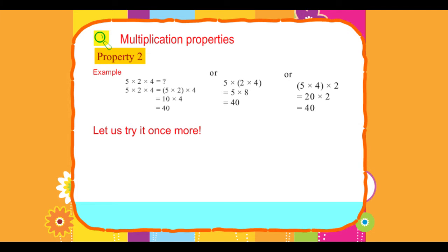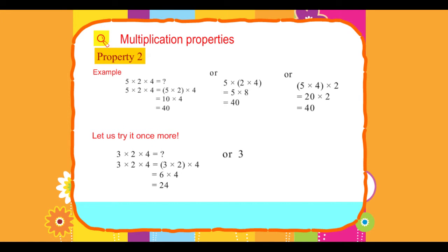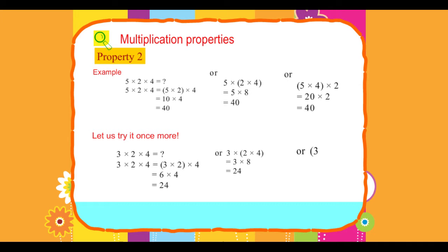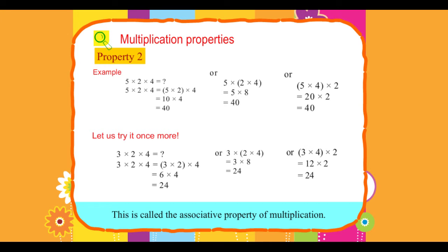Let us try it once more. 3 × 2 × 4: (3 × 2) × 4 = 6 × 4 = 24. Or 3 × (2 × 4) = 3 × 8 = 24. This is called the associative property of multiplication.